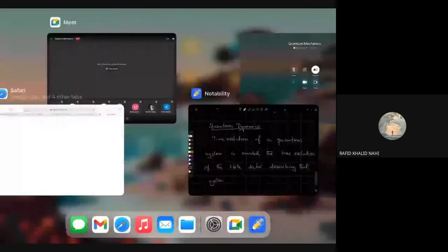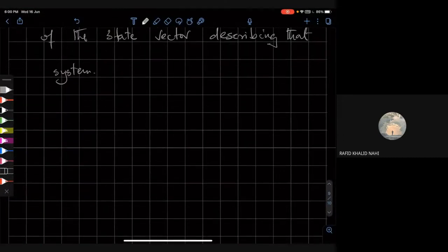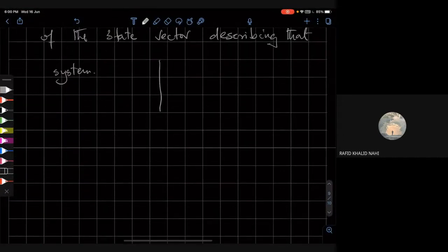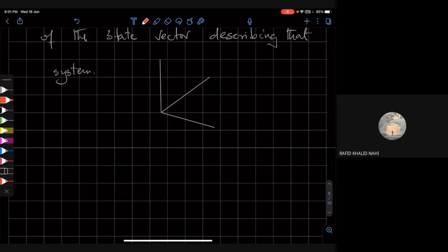If I were to use a very geometrical language, suppose this is my Hilbert space. Hilbert space is a vector space, it could be infinite dimensional, and we have some physical system represented by some state vector. Then there has to be a time evolution - that means that this vector will evolve with time in this Hilbert space. And we want to find the equation which governs this evolution.